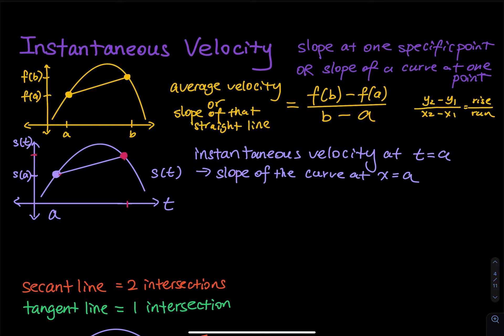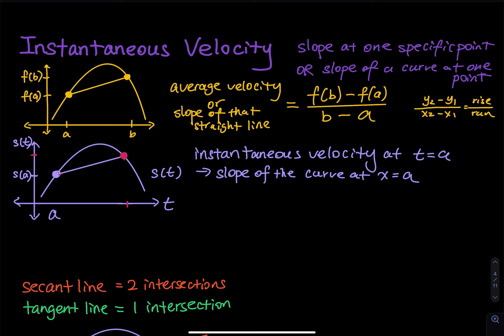For average velocity, I am talking about a specific time window — time between a and b. For instantaneous velocity, I am talking about one specific point. One window versus one point. Average velocity is the slope of a straight line: f(b) minus f(a) divided by b minus a — which is y2 minus y1 divided by x2 minus x1, also known as rise over run.